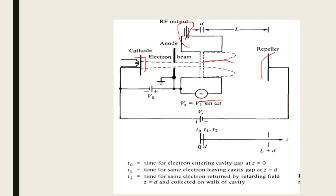At the same time, there is something called a repeller. The repeller will make sure that the electrons are getting repelled and coming back to the cavities — they are re-entering back into the cavities. The charge on this repeller is of course negative, so that the negative-charge electrons, when they are coming, get repelled and then come back to the cavities. The repeller will be highly negatively charged as compared to the cavity.